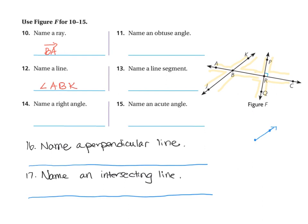Now I could have done KBA or angle B, but it just doesn't matter as long as they're all connecting — A connects to B and B connects to K. So my final answer written with the angle symbol is angle ABK.